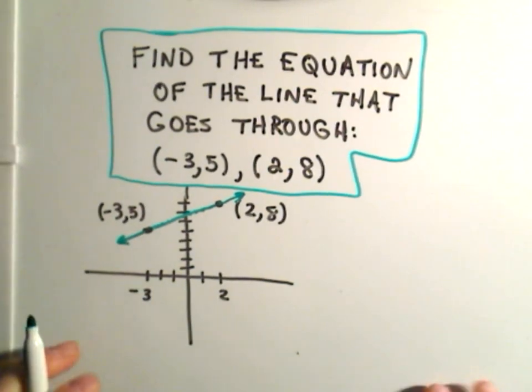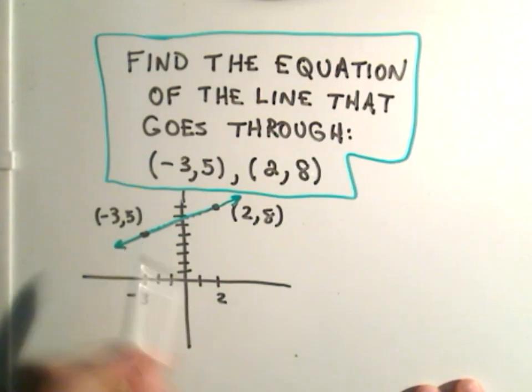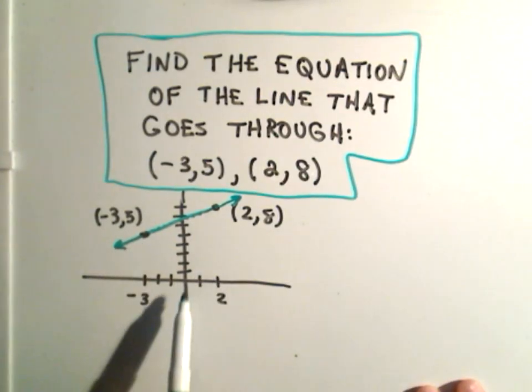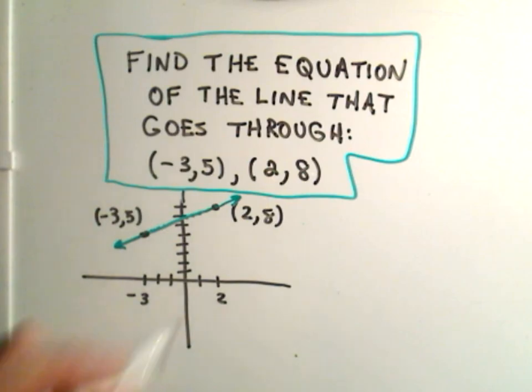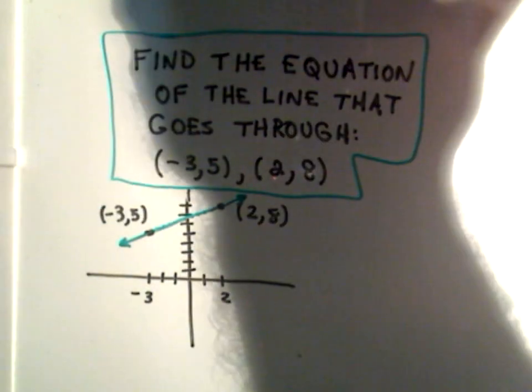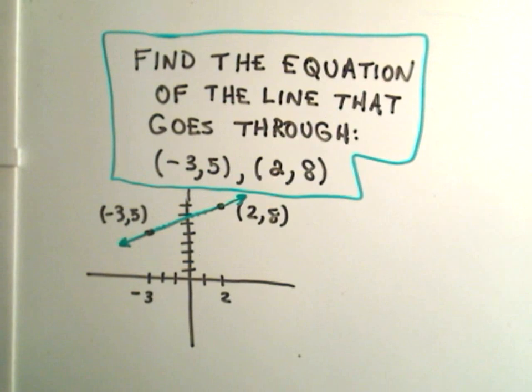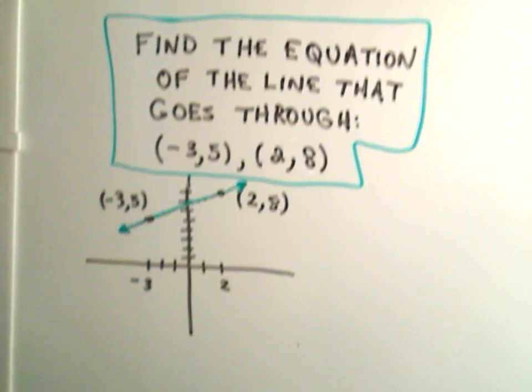So there's my little point, negative 3, 5, and also through 2, 8. So I go over 2 and up 8. Just by eyeballing this, I can tell that the slope is going to have to be positive just because the line's increasing as we move left to right.